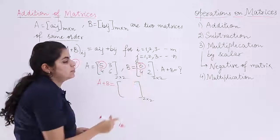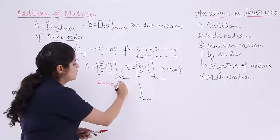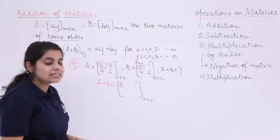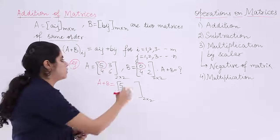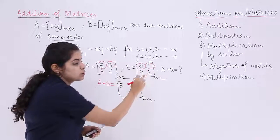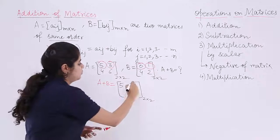So I have a new matrix of the same order 2 by 2 which is obtained by adding the first element here with first element here. That is A11 plus B11. 5 plus 0 is 5. Similarly, the next element is 3 plus 1, that is A12 plus B12, which is 4.